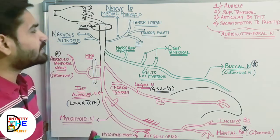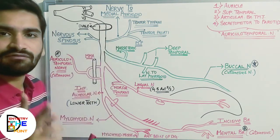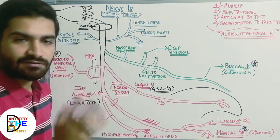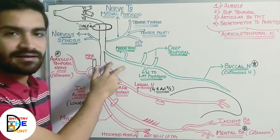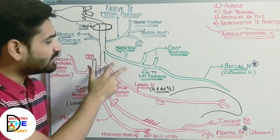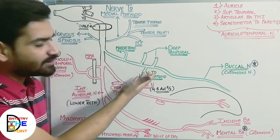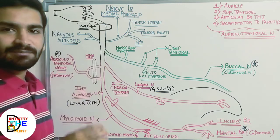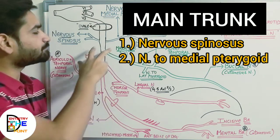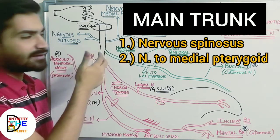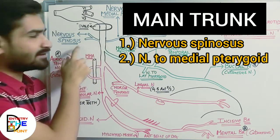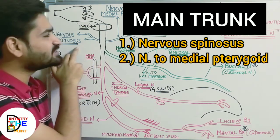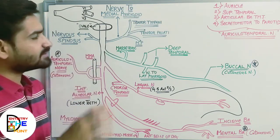The main trunk gives two branches. The anterior division gives four branches, and the posterior division gives three branches. The first branch of the main trunk is the nervus spinosus, which is a meningeal branch. The second branch from the main trunk is the nerve to medial pterygoid.